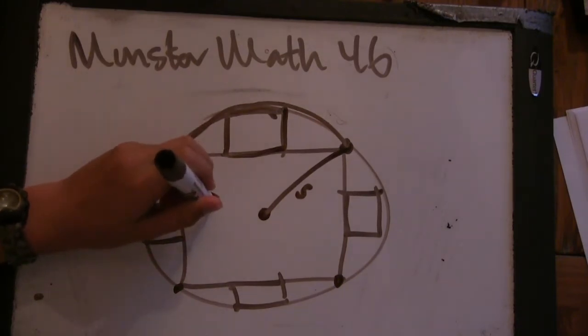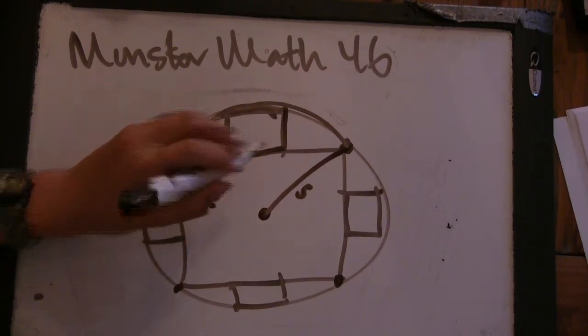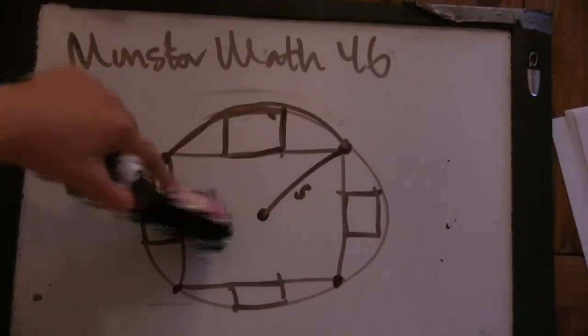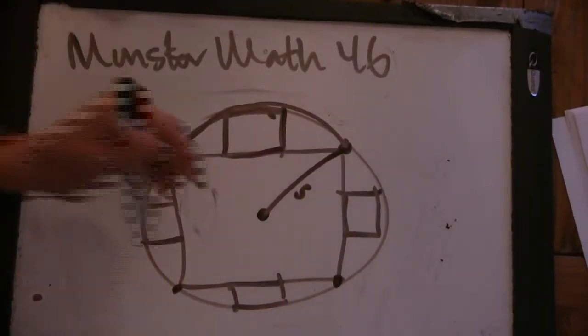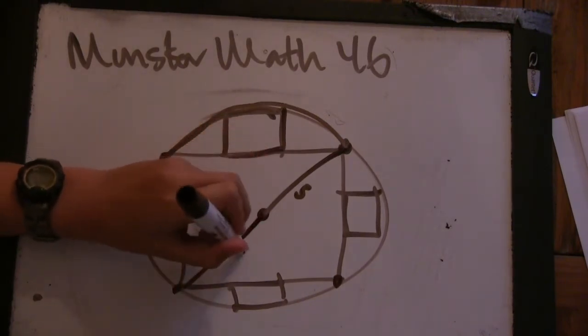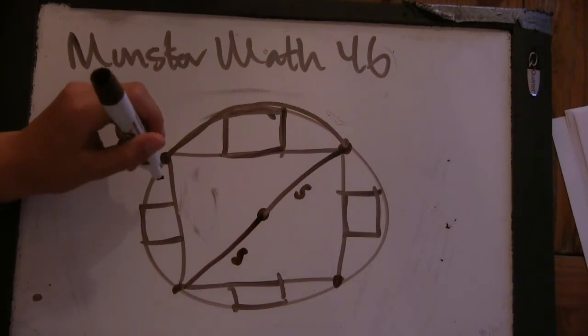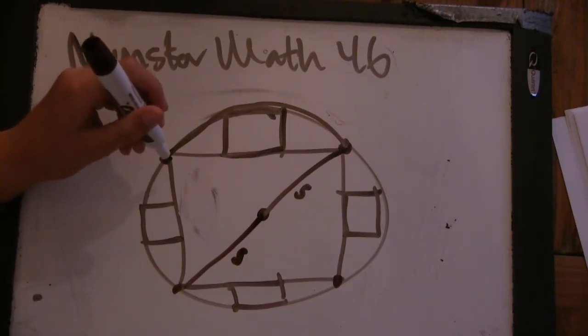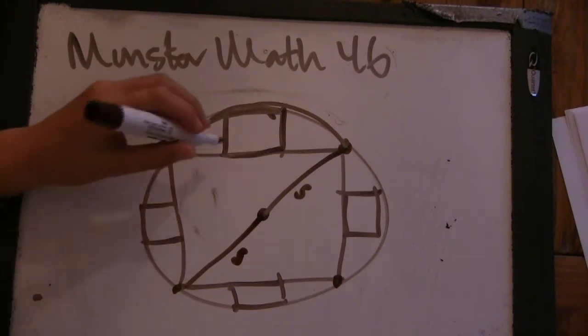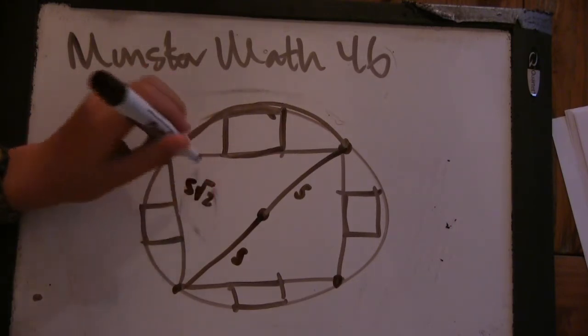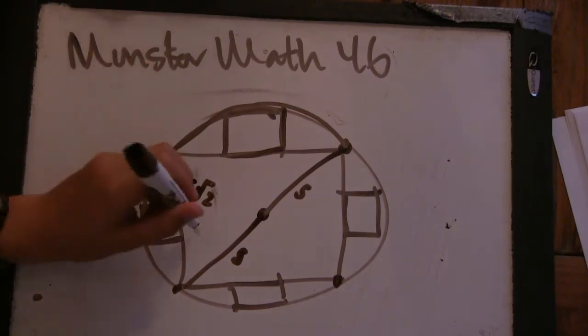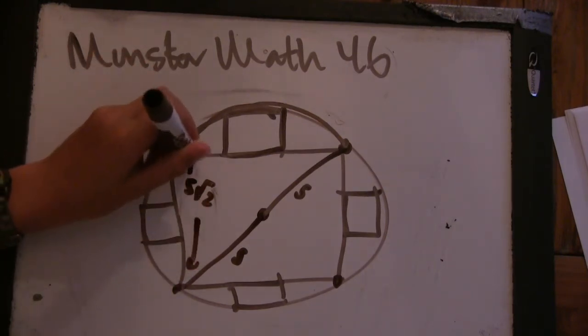The diagonal is 10. So each side is 10 over the square root of 2, or 10 root 2 over 2, so 5 root 2. All right. So the side of the square, the big square, is 5 root 2.